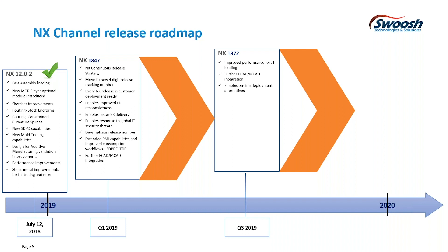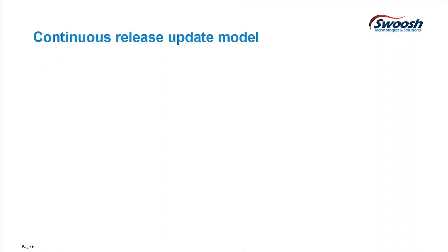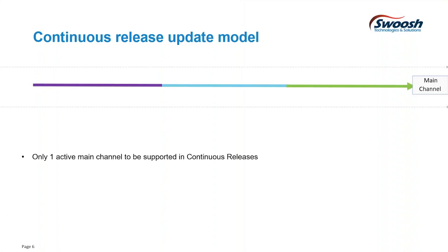Depending on who downloaded and installed it, you might have run into some issues. With the continuous release update model, there's really supposed to be only one release — you just keep seeing NX. You'll get a button in the top right corner of NX saying your session is out of date, please download and do the installation. That's the process for the continuous release.